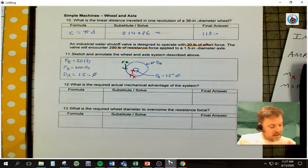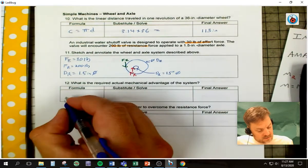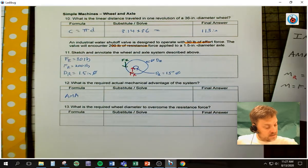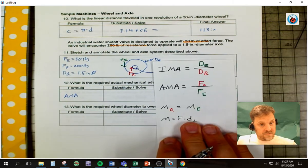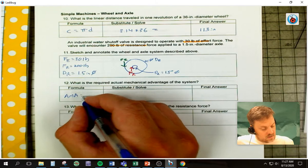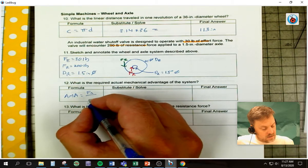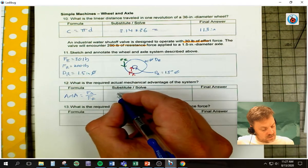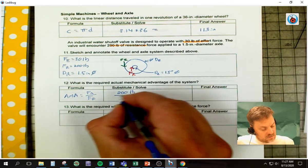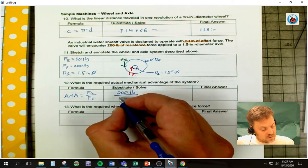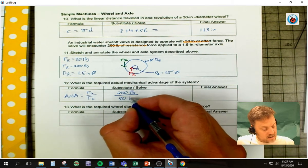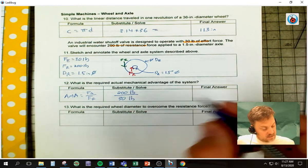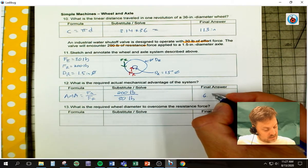What is the required AMA? What's the actual required mechanical advantage? So AMA, and remember my formula is AMA is not free. FR over FE. So FR over FE. Well, my force resistance is 200 pounds over 30 pounds. So when we do that math, that is going to be 6.67.